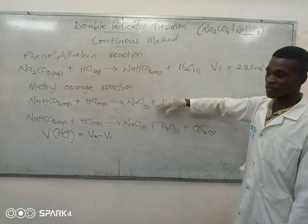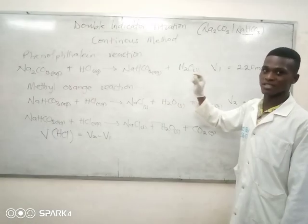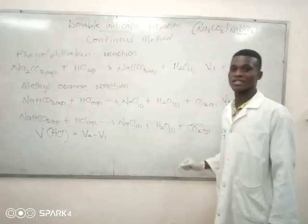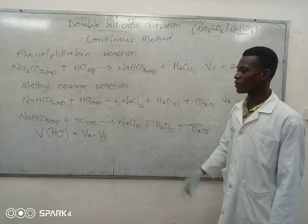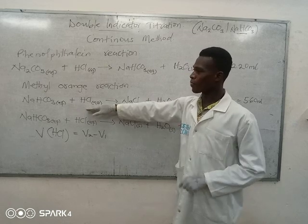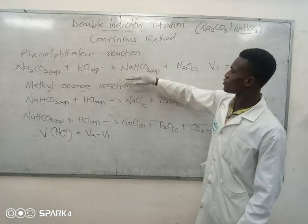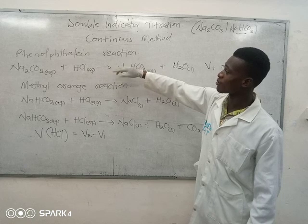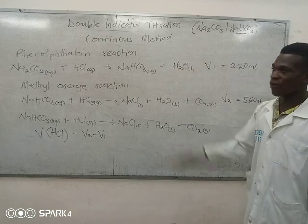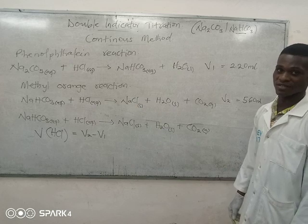Then we go on with the methyl orange reaction. We now have two sodium hydrogen carbonate: the first one that was already in the mixture, and the second one coming from the incomplete chemical reaction from the phenolphthalein step. During the methyl orange titration, the HCl effectively neutralizes all of the sodium hydrogen carbonate in the mixture. The first equation shows the sodium hydrogen carbonate originally present in the mixture being neutralized by HCl — a complete reaction. When sodium chloride, water, and carbon dioxide are produced, that is a complete chemical reaction.